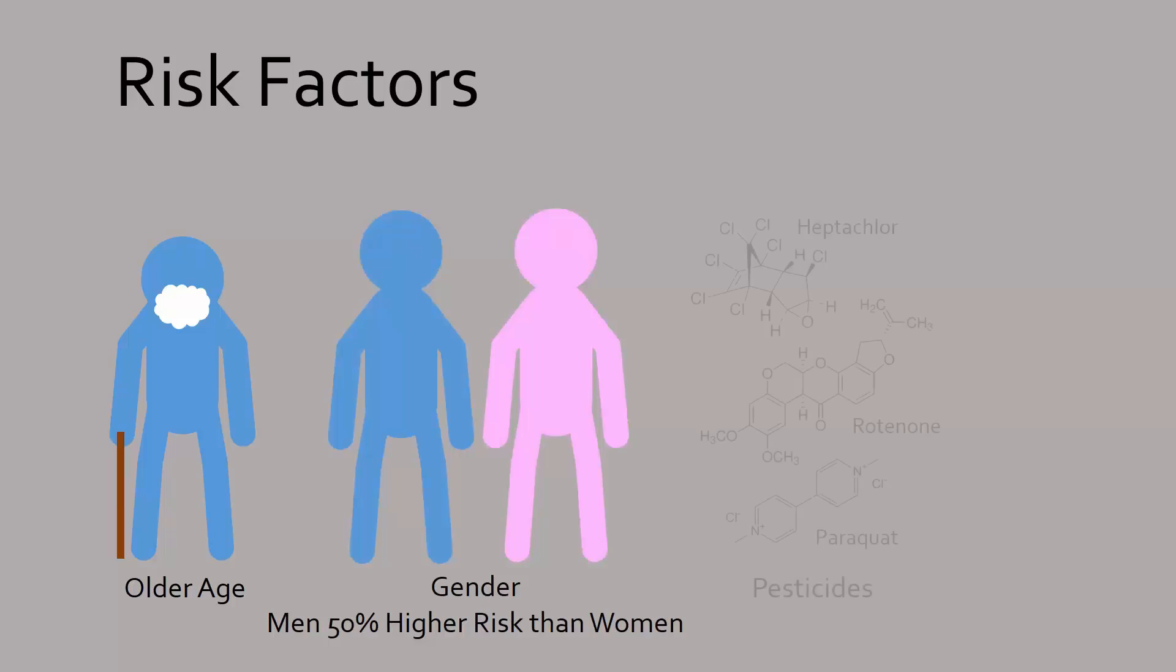Research has shown that exposure to certain pesticides, or having many family members with Parkinson's seem to increase the risk of developing the disease, implying that both environmental and genetic factors play a role. However, this only describes a minority of people with Parkinson's, with the majority being cases with no known cause.